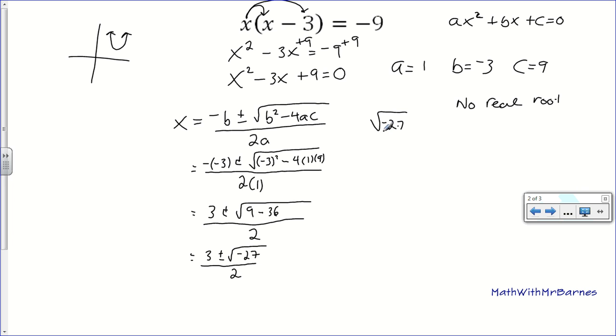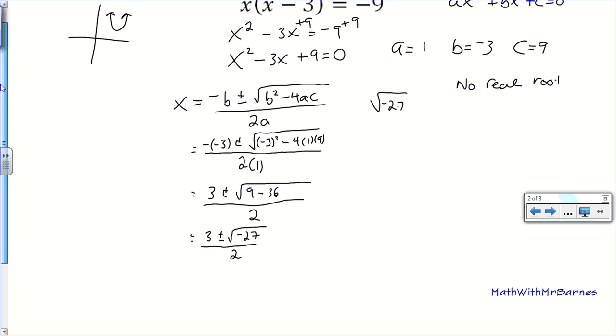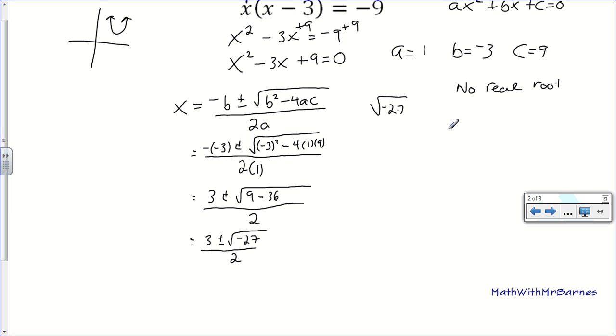So, we still need to algebraically find the exact roots. The problem is you can't take the square root of a negative number. So, many years ago, when they were stumped on this, they basically just came up with the decision that the root negative 1 is equal to i. So, what we can do is we can break this 27 up into negative 1 times 27, which is the same as root negative 1 times 27, which is i root 27.